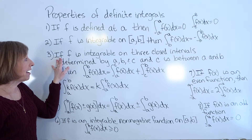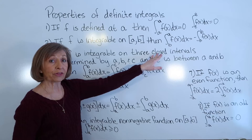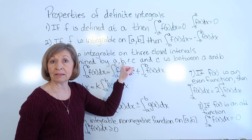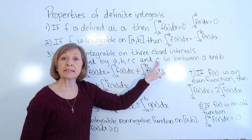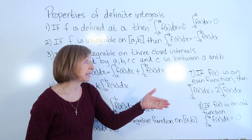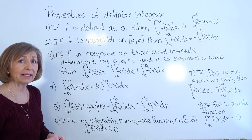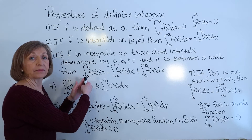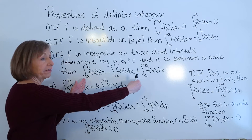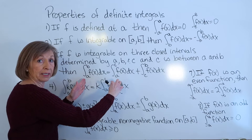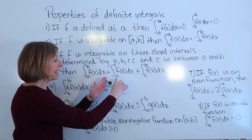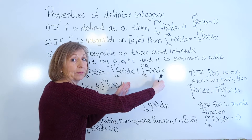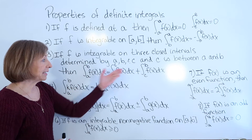Next, if f is integrable on three closed intervals determined by values a, b, and c, where c is between a and b, then you have an additive property: the definite integral from a to b of f of x dx equals the integral from a to c plus the integral from c to b.